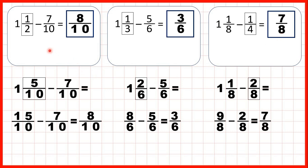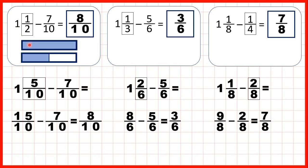So let's think about what we did here. For this first question, we started with 1 and a half. We changed that to 1 and 5 tenths, but we needed to subtract 7 tenths, so we changed our 1 whole into tenths as well, and that gave us 15 tenths. Then we could subtract 7 of those tenths, to leave us 8 tenths as our answer.